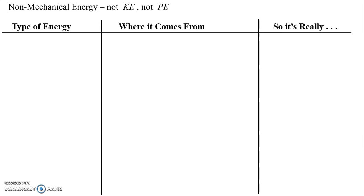The first column is type of energy, the middle column is where it comes from, and the last column says 'so it's really' — that'll make more sense once we get to it. Go ahead and fill in the left-hand column with some of the types of energy you know about, leaving space so we can talk about where they come from and what they really break down to.